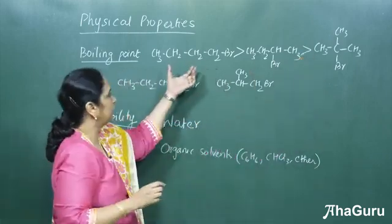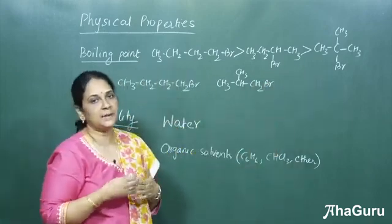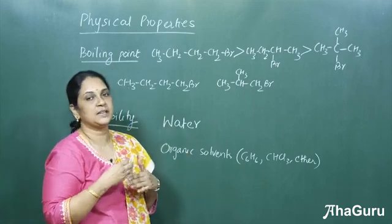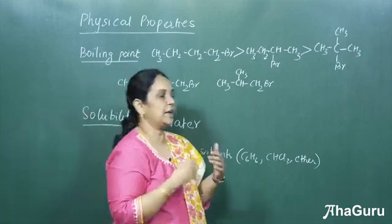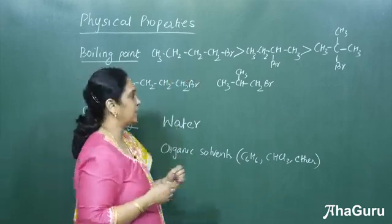That is because the surface area of this compound will be more compared to this. When there's less surface area, the interaction between two molecules is less, so you supply less energy to break the bond. This is the order for the boiling point in case of position isomerism.